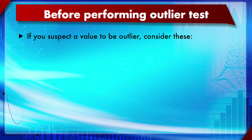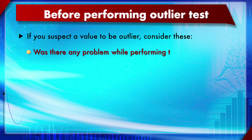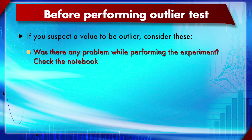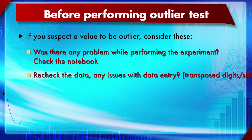Before even performing the outlier test, if you suspect an outlier, you have to check what is special about that reading. Was there any problem while performing the experiment? Check the notebook — for example, in chromatography, if you heard a spurious noise and saw an abnormal result at that time, you can remove that outlier. Also recheck the data for issues like transposed digits, a shifted decimal point, or software code errors.